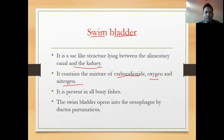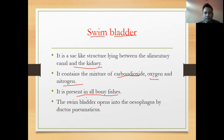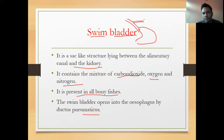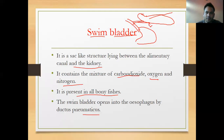The swim bladder opens into the oesophagus by the ductus pneumaticus. The swim bladder is connected to the oesophagus through this duct called the ductus pneumaticus.